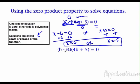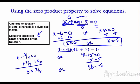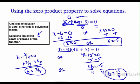Now let's try another example. Set the first factor (b minus 3/4) equal to 0 or the second factor (4b plus 5) equal to 0. Solving the first: b equals 3/4. For the second: subtract 5 to get 4b equals negative 5, divide by 4, so b equals negative 5/4. Two answers — either would make one of those factors equal to zero.